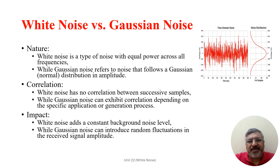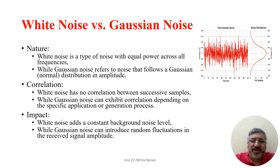We can compare white noise with Gaussian noise with respect to three aspects: nature, correlation, and impact. Regarding nature, white noise has the same power at all frequencies, whereas Gaussian noise is characterized by a Gaussian normal distribution and is not uniform across all frequency spectrums. Regarding correlation, white noise lacks any correlation between consecutive samples, whereas Gaussian noise may exhibit some correlation depending on the particular application or generation process. Regarding impact, white noise maintains a consistent level of background noise, while Gaussian noise can produce unpredictable variation in the amplitude of the perceived signal.